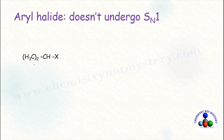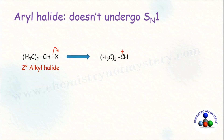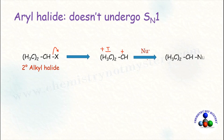Now, considering SN1 reaction — here I have taken a secondary alkyl halide. When the leaving group leaves the molecule in the first step, a carbocation is formed. This carbocation is stabilized by the +I effect of the alkyl group and by hyperconjugation. The nucleophile then gets attached to the unstable carbocation and the substituted product is obtained. That's how alkyl halide undergoes SN1 reaction.